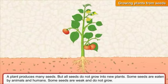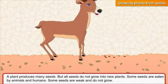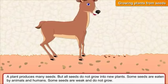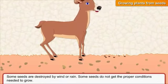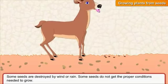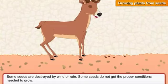A plant produces many seeds, but all seeds do not grow into new plants. Some seeds are eaten by animals and humans. Some seeds are weak and do not grow. Some seeds are destroyed by wind or rain. Some seeds do not get the proper conditions needed to grow.